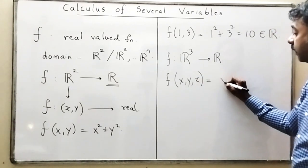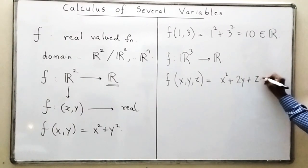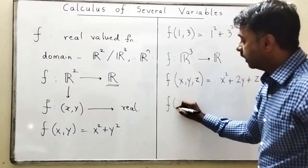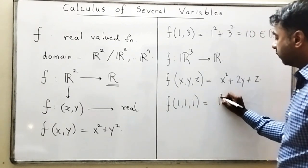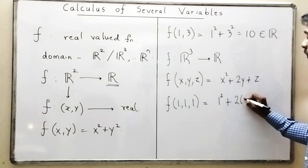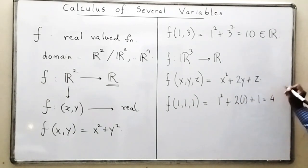I'll take x² + 2y + z. So if I ask what is the answer of f(1,1,1), then it will be giving me the answer 1² + 2(1) + 1, you see this is again a real number, say some 4.